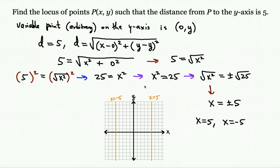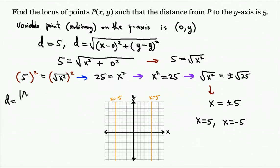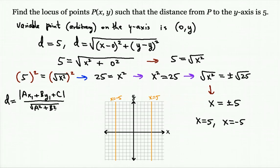An alternative method would be to use the formula that gives you the distance from a point to a line. The distance formula from a point to a line is: the absolute value of (Ax₁ + By₁ + C) divided by the square root of (A² + B²), and the distance we know here equals 5.